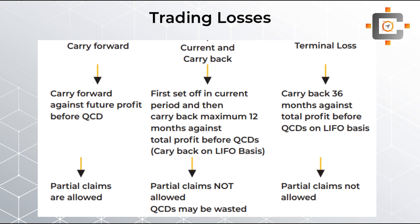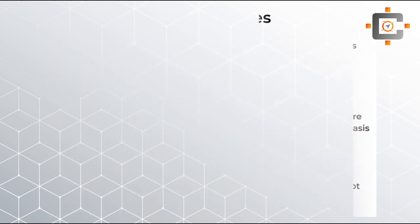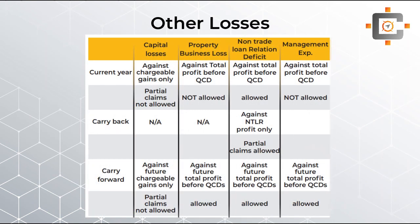These points are the most important things for the examination and must be memorized properly. The terminal loss works the same as the income tax terminal loss relief — there, three-year carry back was available on a LIFO basis. Here in corporation tax, the terminal loss is also a 36-month carry back against total income on a LIFO basis. For the terminal loss, partial claims are not allowed. That covers trading losses. Now let's move on to capital losses.